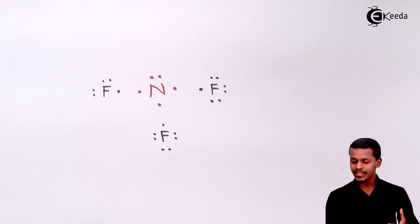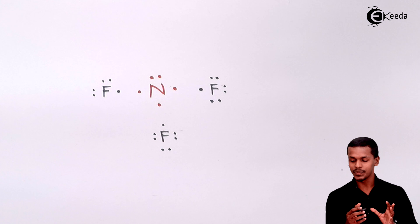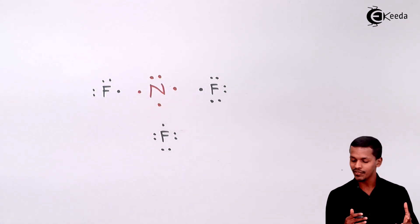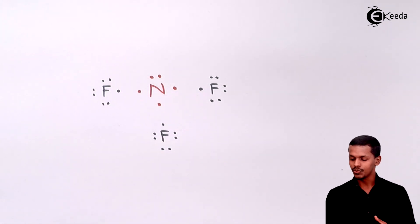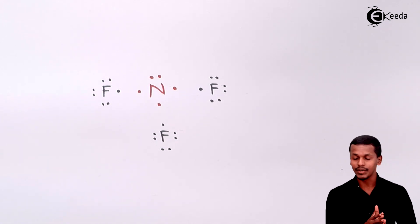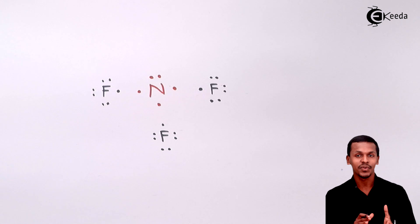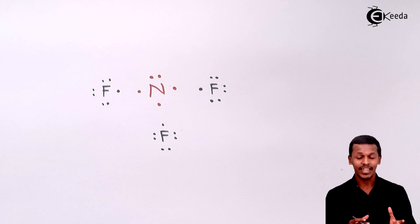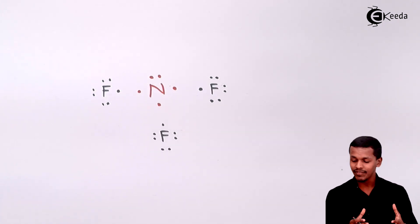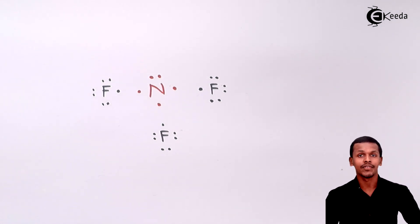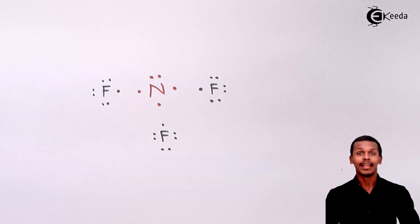In the Lewis dot structure of NF₃, the black dots represent fluorine's electrons and the red dots represent nitrogen's electrons. Two electrons — one from nitrogen and one from fluorine — are shared between nitrogen and each fluorine, forming one bond each. There are three such bonds. The remaining two electrons on nitrogen are not shared with any atom and remain as a lone pair. This is the Lewis dot structure of NF₃, with nitrogen at the center.